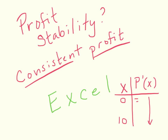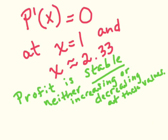You may want to pause here and contemplate what it means if we take the derivative of the profit function and set it equal to 0. When I used goal-seek, I got that the derivative is 0 at a value of x equals 1 and approximately x equals 2.33. My interpretation is that this is where profit is stable — it's neither increasing nor decreasing at these values.